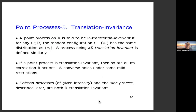A point process on ℝ is translation invariant if translating the process gives exactly the same distribution. In particular, that forces all the n-point correlation functions to also be translation invariant. In our case, the correlation functions determine everything, so the two notions of translation invariance are equivalent. The Poisson processes are all translation invariant, and the sine process is translation invariant.